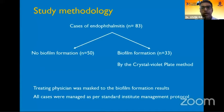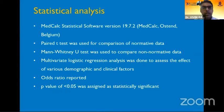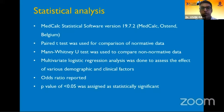We recruited 83 eyes with endophthalmitis, of which 50 had no biofilm formation whereas 33 had biofilm formation detected by crystal violet plate method. The treating physician in the clinic was masked to the biofilm formation results and all cases were managed as per standard institute management protocol. Statistics were done on MedCalc statistical software where T-test was used for comparison of normative data and Mann-Whitney U was used for comparison of non-normative data. Multivariate logistic regression analysis and appropriate odds ratios were reported to assess the effect of various demographic and clinical factors on anatomic and functional outcomes. A p-value of less than 0.05 was assigned as statistically significant.